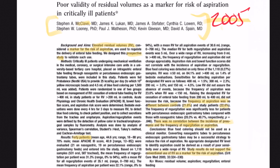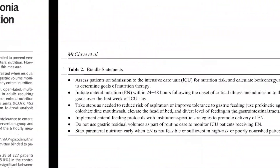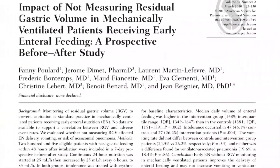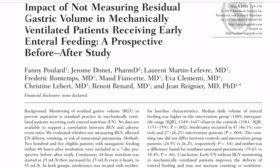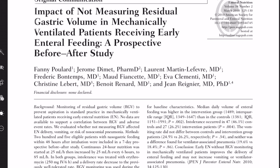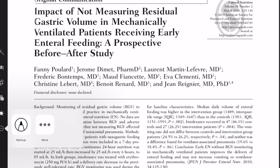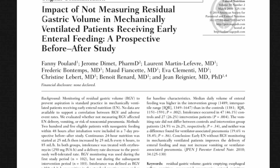That first study — even though it was small, just 40 patients — already started giving us a hint that we should stop checking residuals. The link is on my website in the description box below. The second study was published in 2009 and is titled 'The Impact of Not Measuring Residual Gastric Volume in Mechanically Ventilated Patients Receiving Early Enteral Feeding,' and it was a prospective before-and-after study.